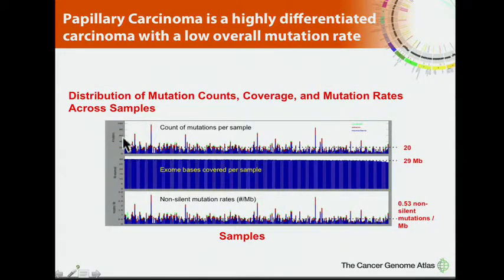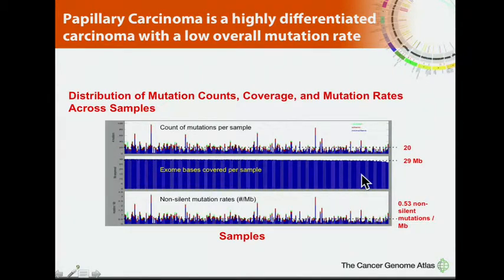Papillary carcinoma is a differentiated tumor and overall has a low mutation rate. Looking at mutations per sample, it's generally uniform, but a few samples jump up showing a much higher mutation rate. The sequencing coverage is outstanding, and the overall rate is quite low. Thyroid was definitely on the left end of that plot — away from head and neck squamous cancer. Not surprising, because it is such a well-differentiated tumor.